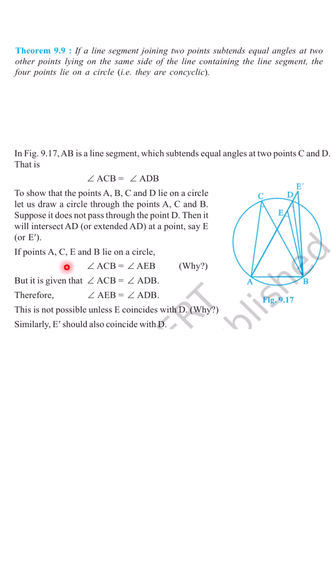Now if points A, C, B, E lie on a circle, then angle ACB will be equal to angle AEB, because angles in the same segment of the circle, on the same side of that segment, are equal.